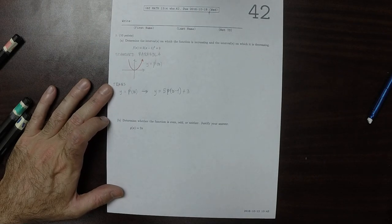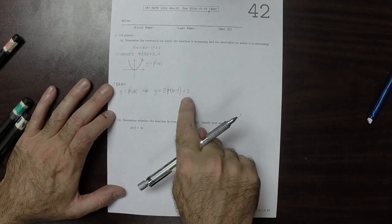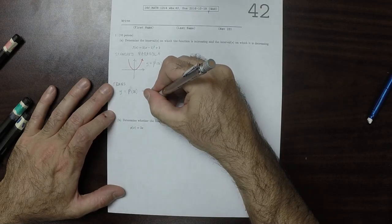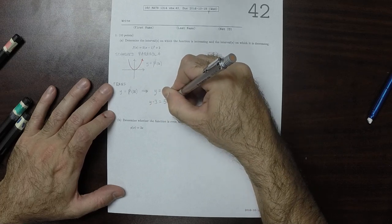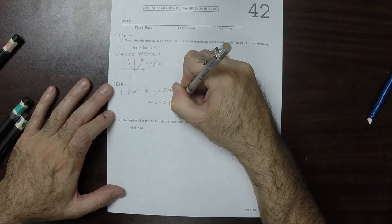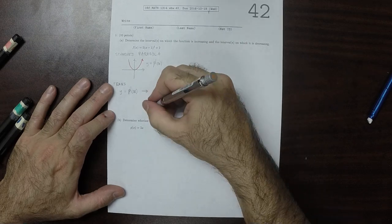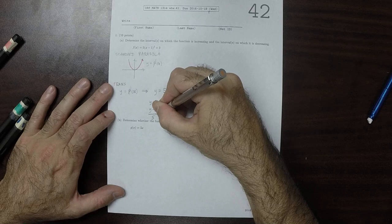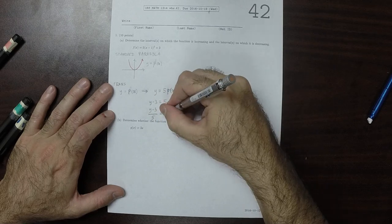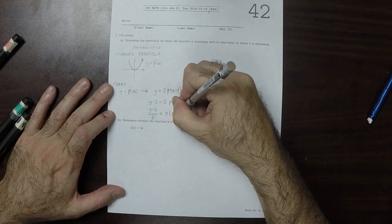So now I could move this 3 to the left, and that would be y minus 3 is 5, p of x minus 1. And then I could divide by 5, and we'd have y minus 3 over 5 is p of x minus 1.